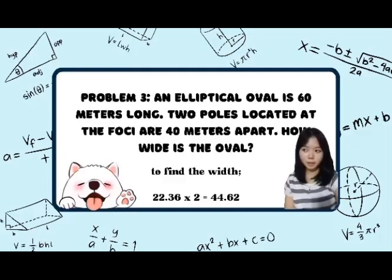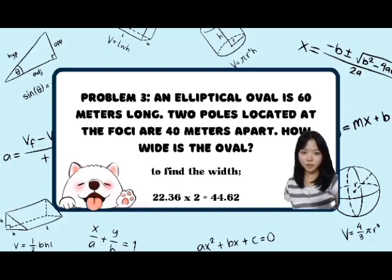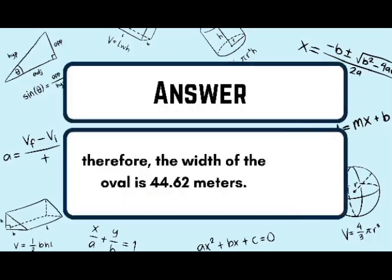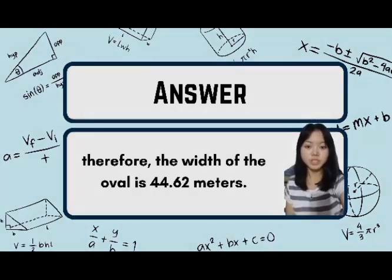Going back to the problem, we are asked to find how wide the oval is. To find the width, we multiply the value of B by 2: 22.36 × 2. Therefore, the width of the oval is 44.62 meters.